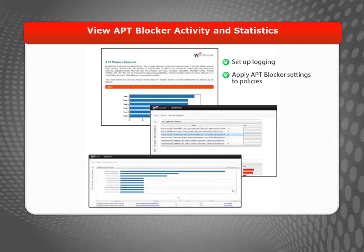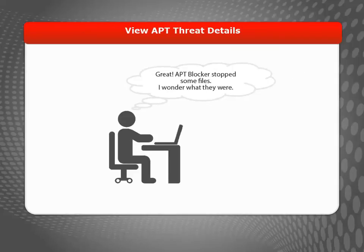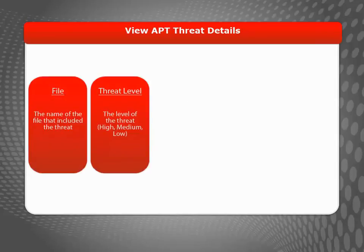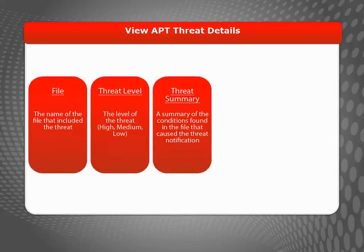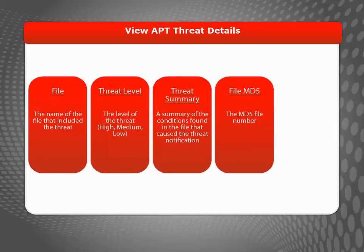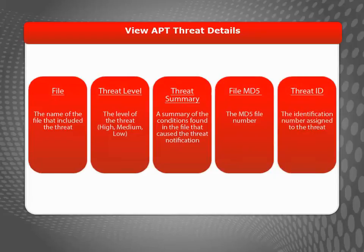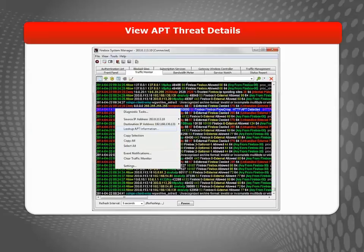To view the APT Blocker data for your network, navigate to the Services section in Dimension. For more information about using Dimension to protect your network, see Fireware Help. If you do look at the activity and reports and notice that threats have been blocked by APT Blocker, you can take a look at the log messages for more granular information. You can expect to see the file name and threat level, a brief threat summary, the MD5 file number, and the threat ID number reported for each detected threat.